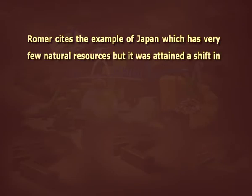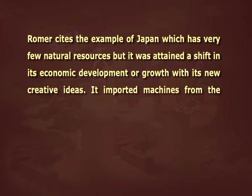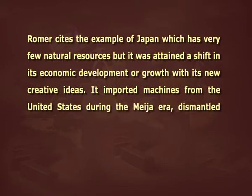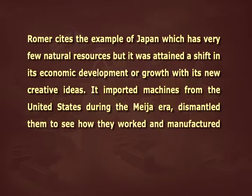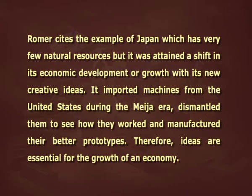Thus, production of goods from increased knowledge displays increasing returns, and competitive equilibrium is consistent with increasing aggregate returns, opening to externalities. Romer takes investment in research technology as an endogenous factor for rational profit-maximizing firms. Romer's model identifies a research sector specializing in the production of ideas, using human capital along with the existing stock of knowledge to produce new ideas. To Romer, ideas are more important than natural resources — he cited Japan, which has very few natural resources but achieved economic growth through creative ideas, importing machines from the United States, dismantling them, and manufacturing better prototypes.